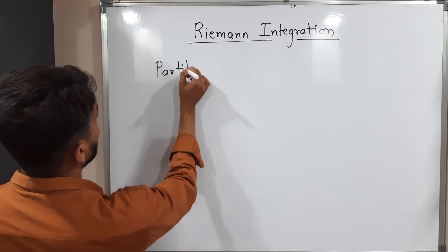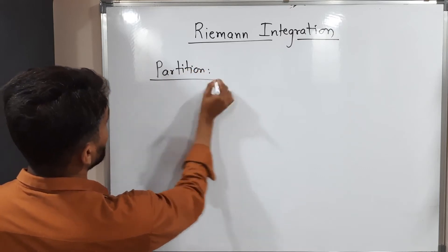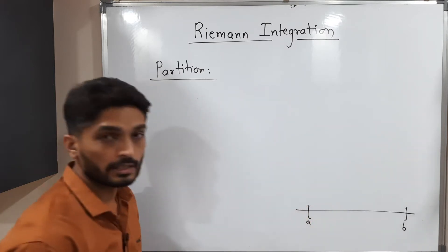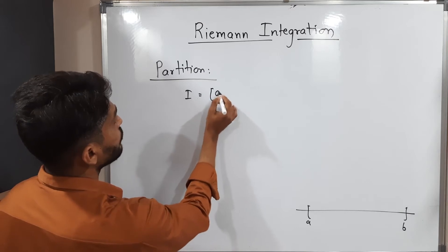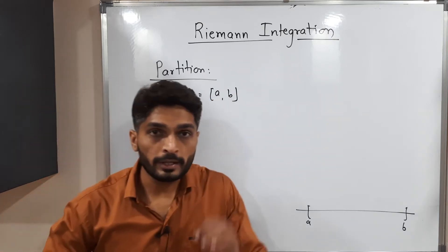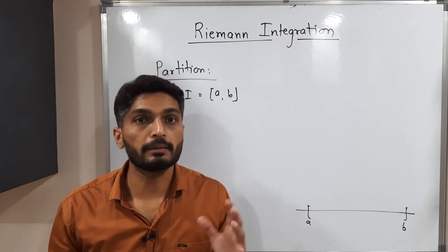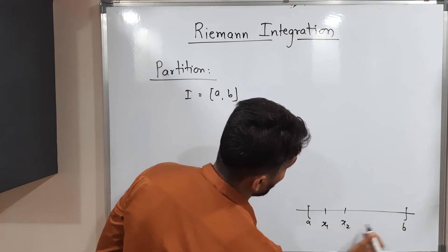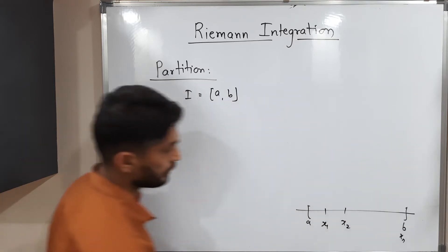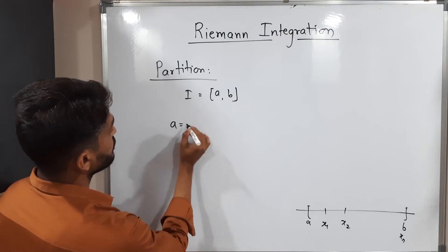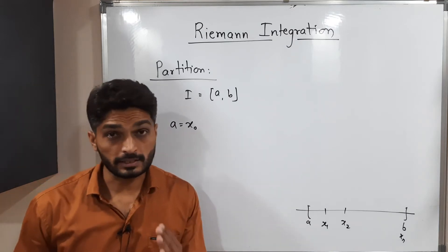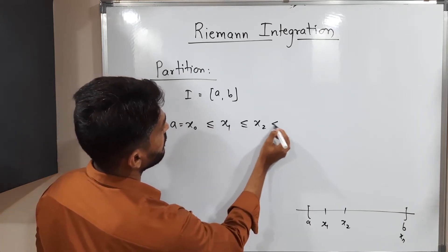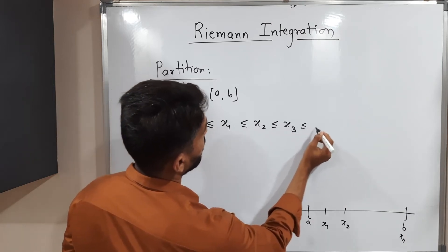If you have any interval, here I consider the closed interval [a, b]. So this is a given interval I = [a, b]. What we do is introduce a few points between a and b — x1, x2, and so on, with the last one being xn. So the first point is x0, which equals a, meaning the starting point is x0, then x1 ≥ x0, then x2, x3, and so on.